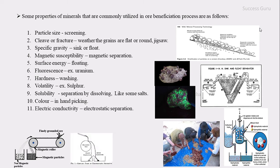The next property is electrical conductivity — used in electrostatic separation. Some minerals may be good electrical conductors while the gang minerals may be poor conductors, so they can be separated on this basis. A basic model of an electrostatic separator is shown in the figure.